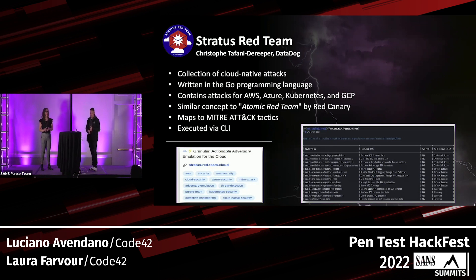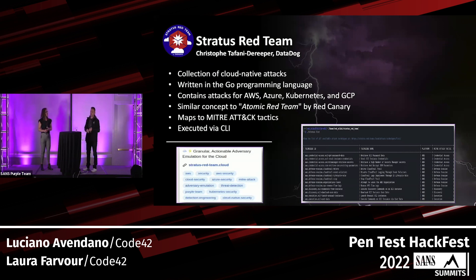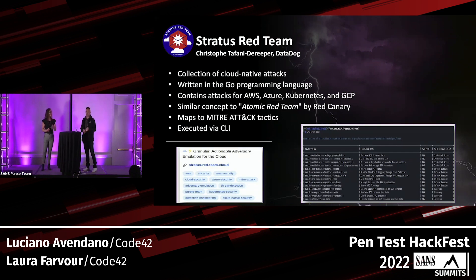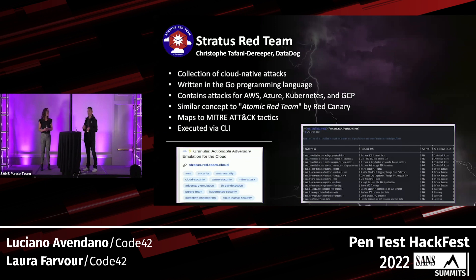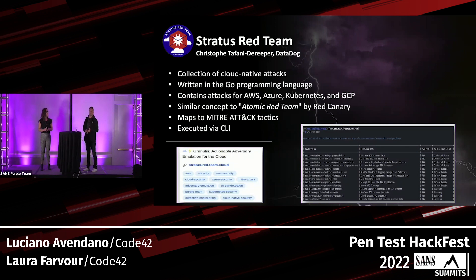GCP presence is growing by the day — the beauty of open source. You download it, run list to see all available attack techniques associated with each cloud provider. It's a very similar concept to Atomic Red Team, which people are already familiar with. It also maps to MITRE ATT&CK tactics, so if you're already using the MITRE framework to catalog your techniques, it already does that. It's executed via CLI — no fancy GUI needed.